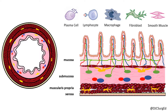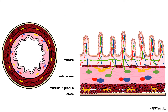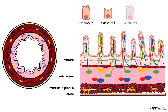The epithelial layer is a continual sheath of epithelial cells containing villi and lining the crypts. The four main cell types include absorptive enterocytes, mucous-producing goblet cells, Paneth cells, and enteroendocrine cells, such as enterochromaffin cells.